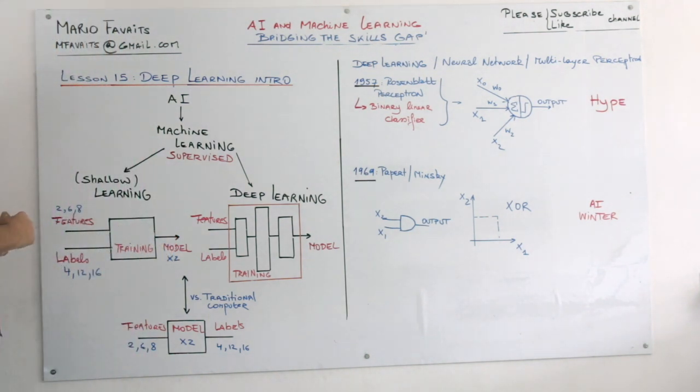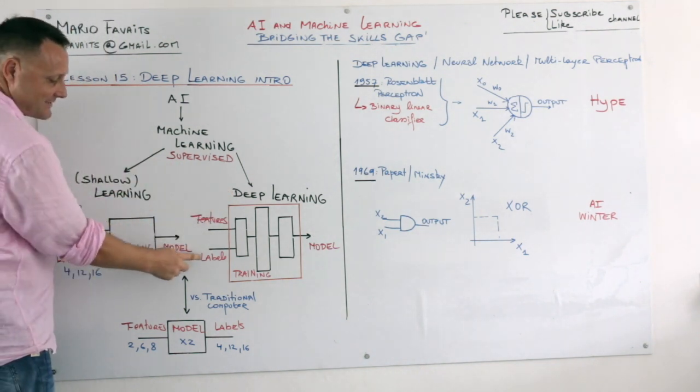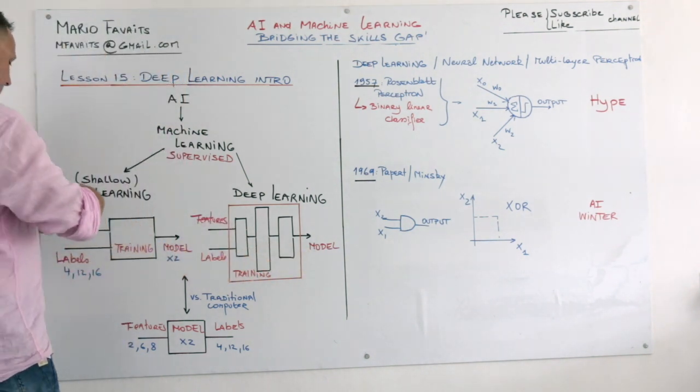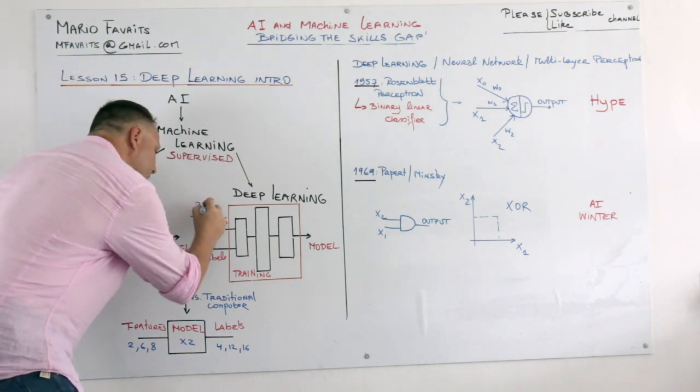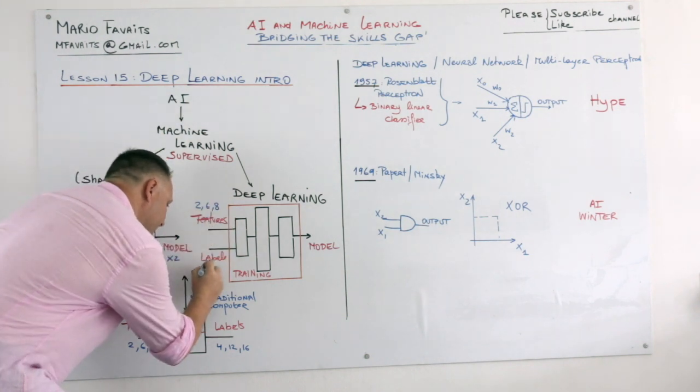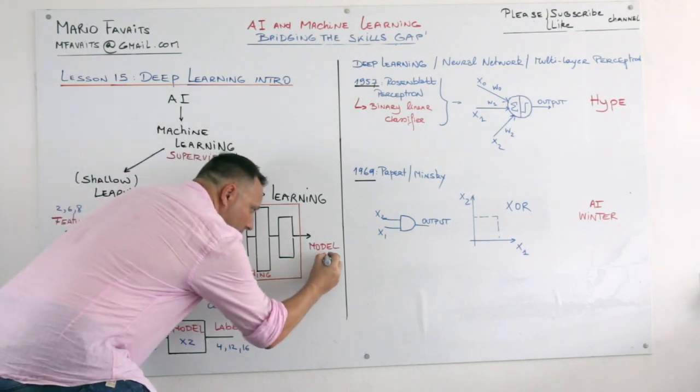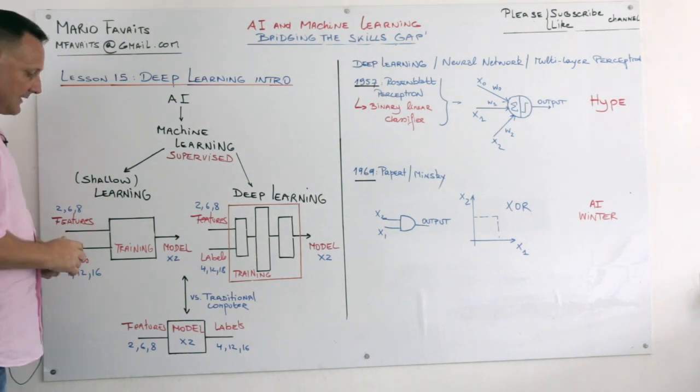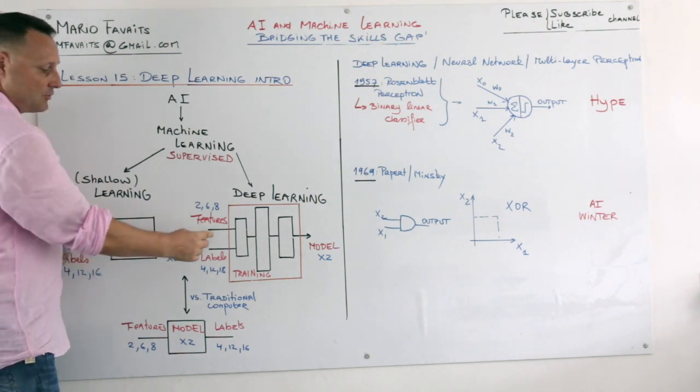So what is deep learning? Well, it's exactly the same. Deep learning supervised means you have the features and the labels that you feed into the machine, and the machine comes out with a model. So here again you have 2, 6, 8. And here again you have 4, 12, 18. And the model the computer will find will still be times 2. Exactly the same context.